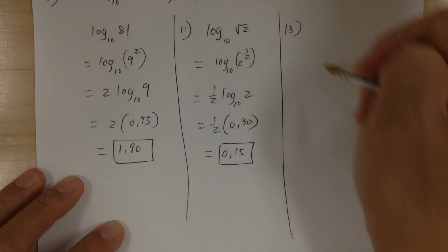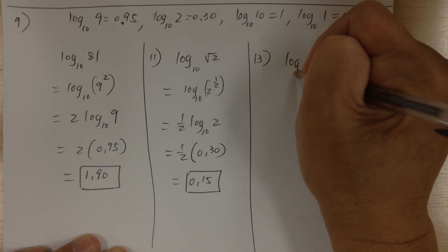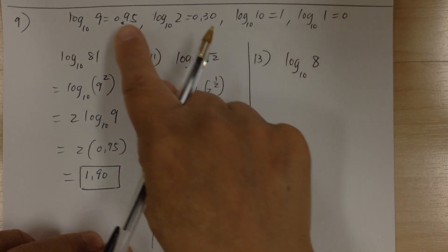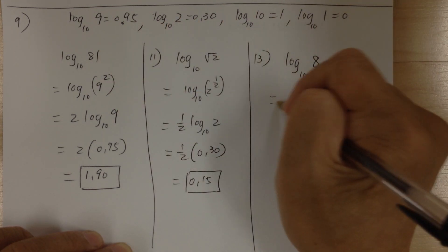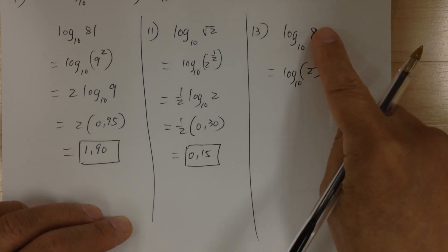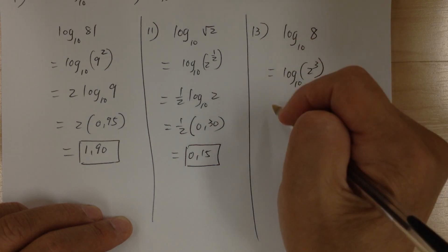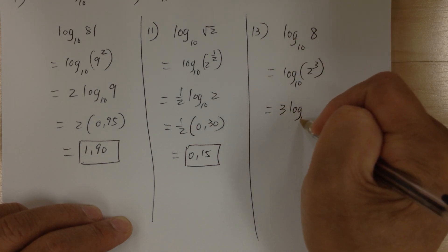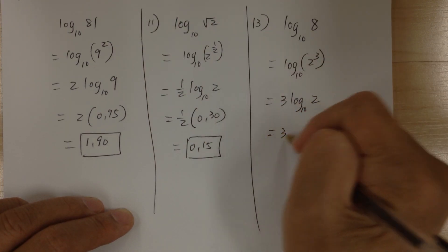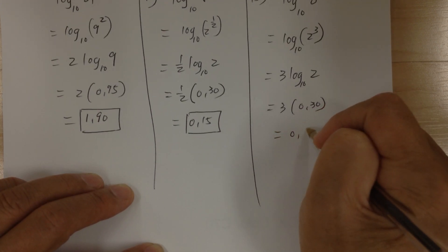Let's go to number 13. Log base 10 of 8. You want to break this into those numbers, and realize that 8 equals 2 to the 3 power. So break this using base 2, then apply the third law to bring the 3 to the front. Now you can evaluate: 3 times 0.30 equals 0.90.